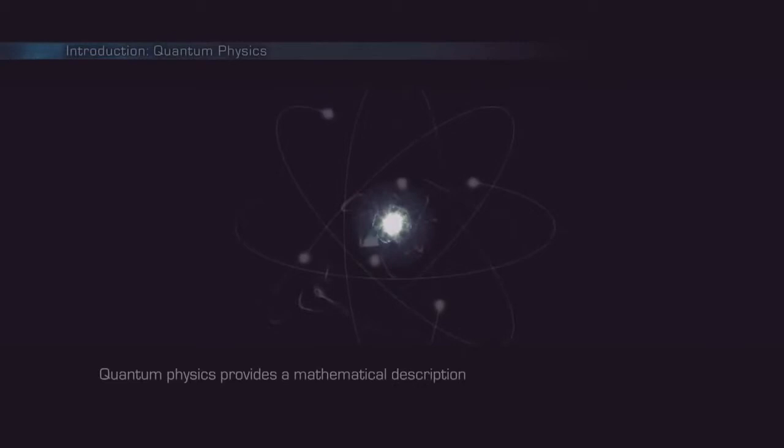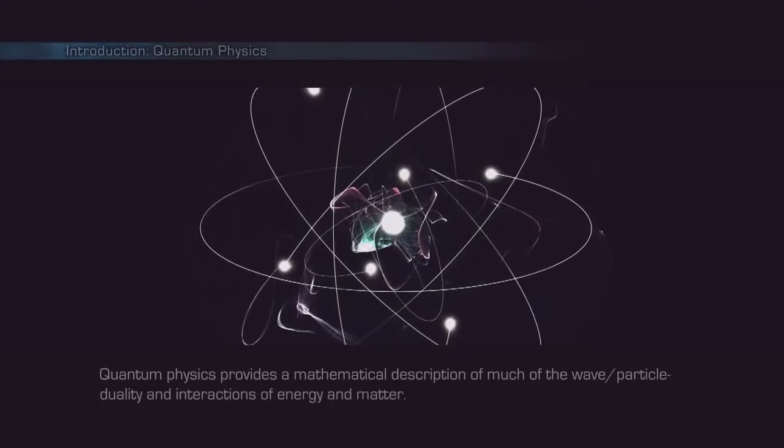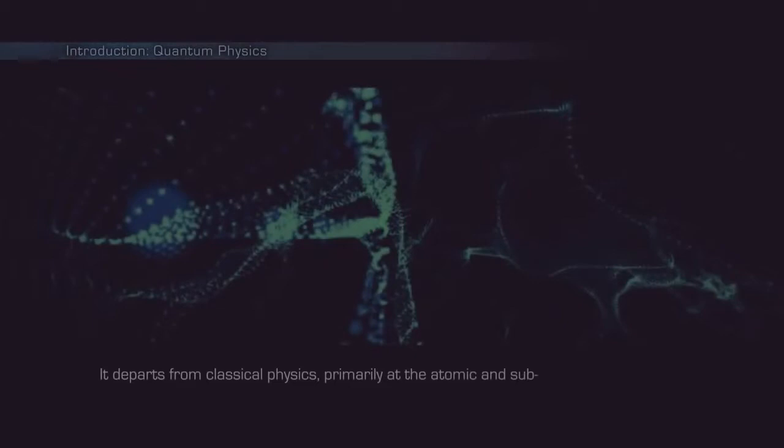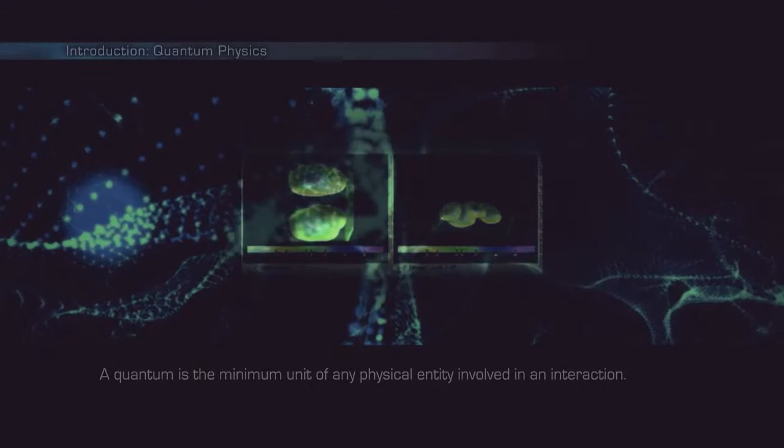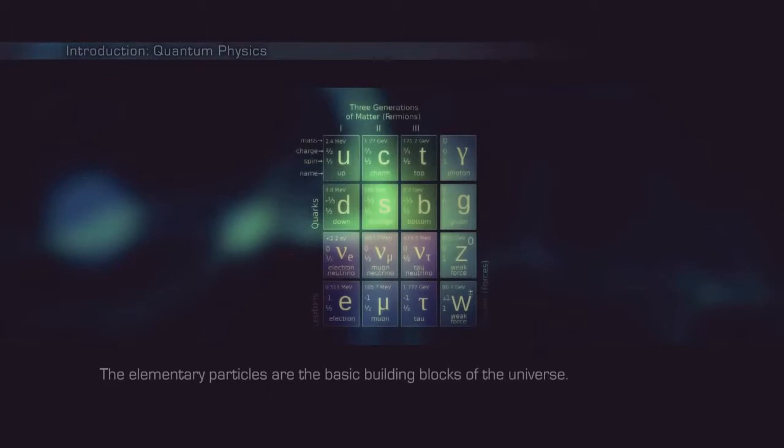Quantum physics provides a mathematical description of much of the wave-particle duality and interactions of energy and matter. It departs from classical physics primarily at the atomic and subatomic scales. The mathematical formulations are abstract and the implications are often non-intuitive. A quantum is the minimum unit of any physical entity involved in an interaction. The elementary particles are the basic building blocks of the universe. They are the particles which all other particles are made of.